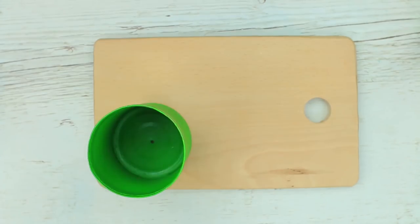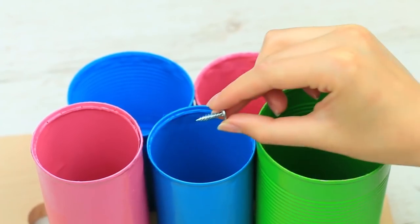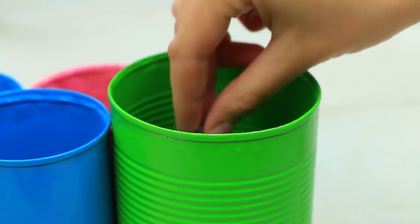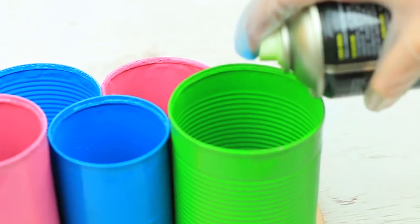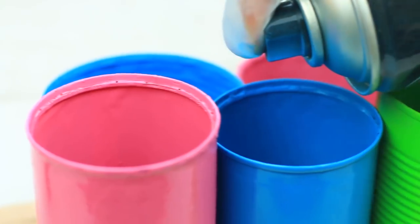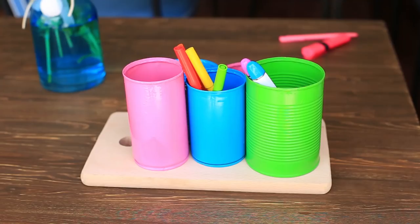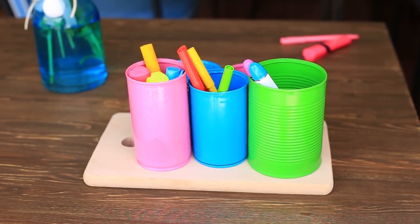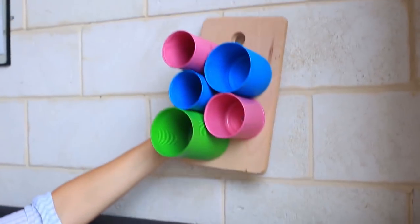Place the cans on a wooden board however you like. Take self-tapping screws again. Secure the cans on the board. Paint the screws. You can use them when they dry. You can place this colorful organizer on your table or shelf or hang it on the wall wherever you like.